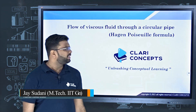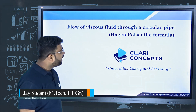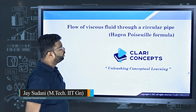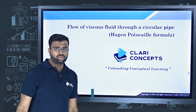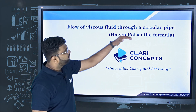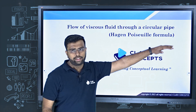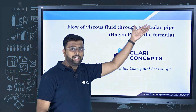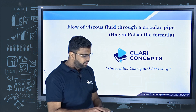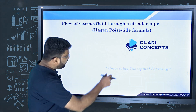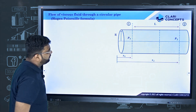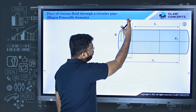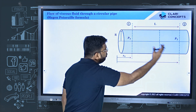Hello students, welcome back to Cleric Concepts. Today we are going to continue this lecture on flow of viscous fluid through circular pipes and derive a formula. This is part 2 of this lecture, so please see the first lecture and then continue. In the previous lecture, we saw that for a circular pipe, we mark two sections — sections 1 and 2.